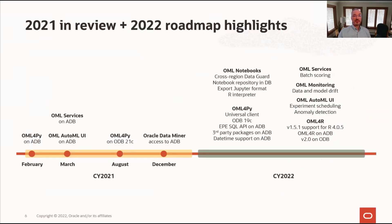Here is a high-level summary of 2021 OML releases and planned features through 2022. In early 2021, OML for Python, OML Services, and the AutoML UI were released — some of these have been covered in past TechCast events.